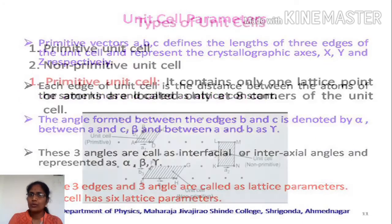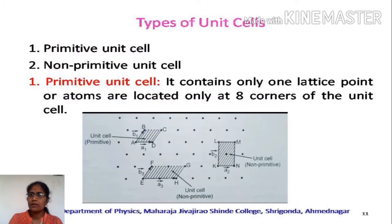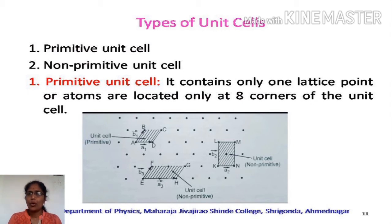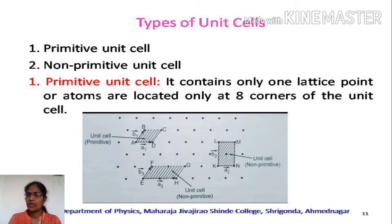A primitive unit cell is a unit cell which has atoms only at the corners of the unit cell — it will have only eight corner atoms and no additional atom is present in it. It is represented with the letter capital P.